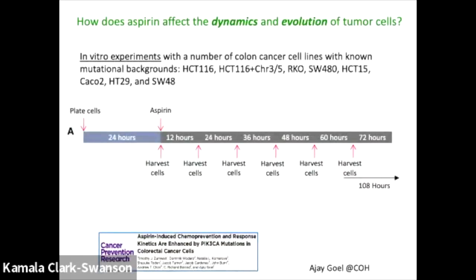Yifan Wang was a postdoc working on this together with Natalia. We started out quite simple in a very basic setting, doing some in vitro experiments — cells in the dish. There were different colorectal cancer cell lines used, and they have different characteristics. Some are microsatellite stable, some unstable, they have different mutational profiles. Essentially they were put in the dish, aspirin was given to them, and the dynamics of cell growth was followed over time.